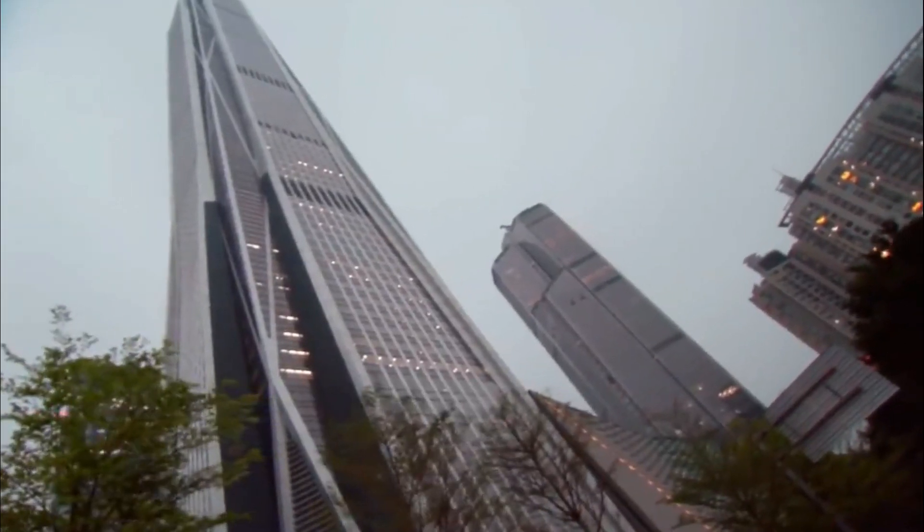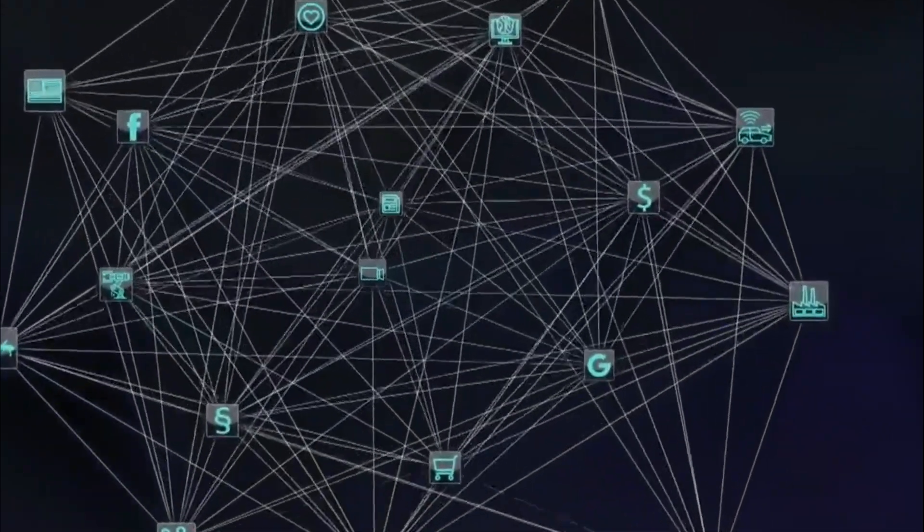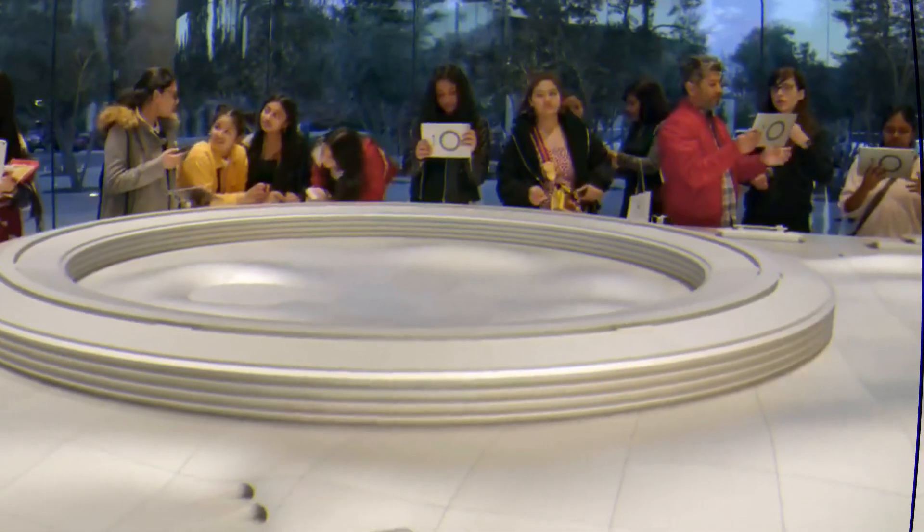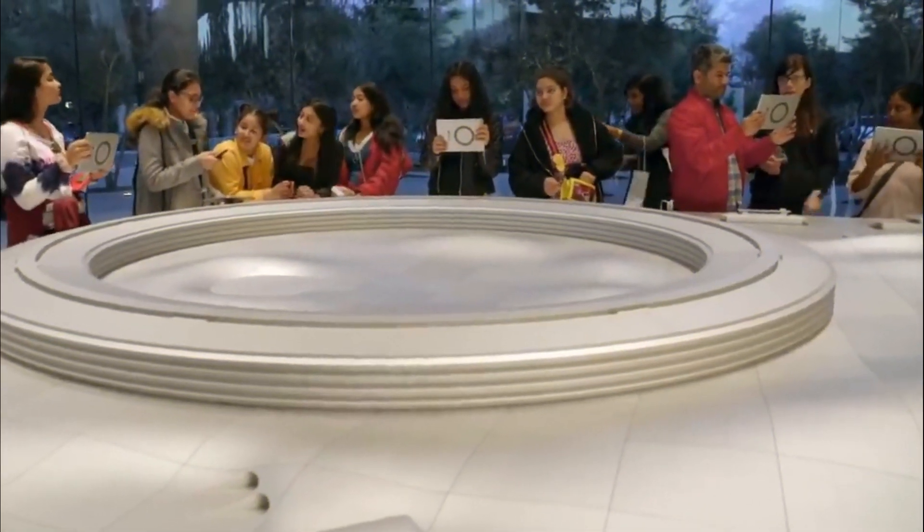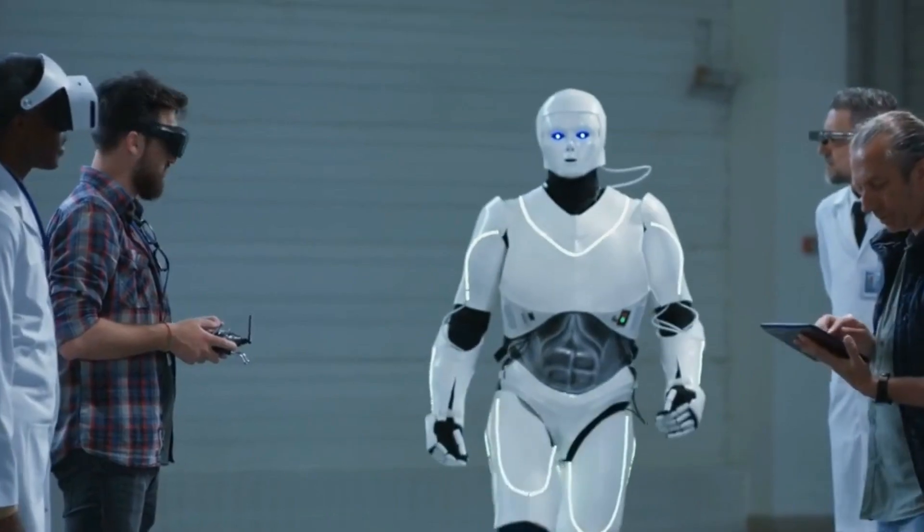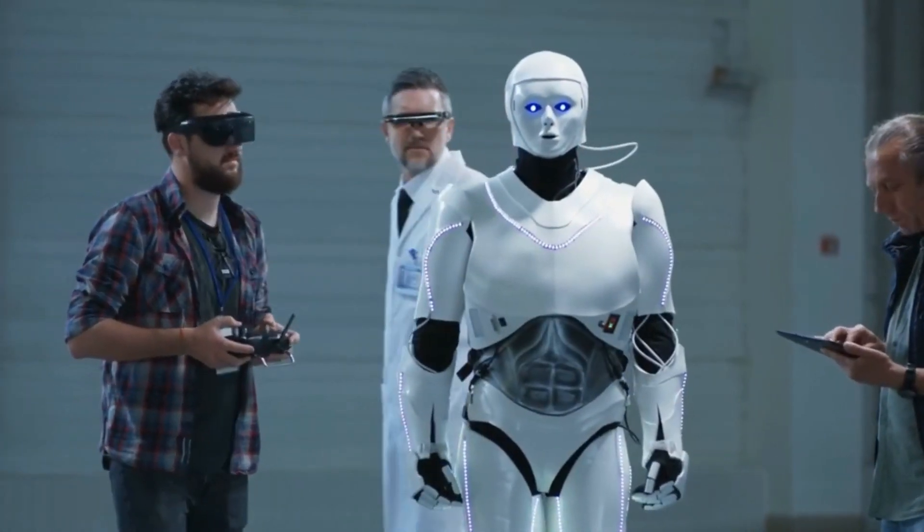Society can use the power of technology to efficiently combat white-collar crime, safeguard financial systems, and create a more secure and equitable economic environment using ethical and well-implemented AI technologies. This finishes our today's video. Subscribe to our channel for more. Thanks for watching.